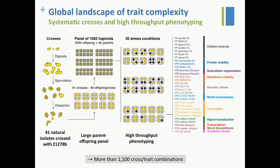To carry out the identification of Mendelian traits and to have a global view of the landscape of trait complexity, we crossed 41 natural isolates with one strain — sigma, a lab strain — generating 40 segregants per cross, for a total panel of more than 1,600 segregants. We phenotyped these segregants by measuring fitness in 30 stress conditions related to physiological and cellular processes such as carbon sources, protein stability, and so on. In total, we obtained more than 1,100 cross-trait combinations.